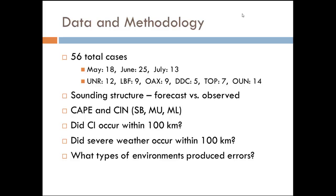The way I looked at these soundings initially was just the overall sounding structure — forecast versus observed. I looked at them in BuffKit initially just to see what some of the differences were and got a qualitative overview. Then I started to quantify them through CAPE and CIN, looking at surface-based, most unstable, and the 100-millibar mixed layer CAPE. CIN didn't tell me a whole lot — a really small error can completely throw off your CIN forecast — so mostly I was focusing on CAPE.